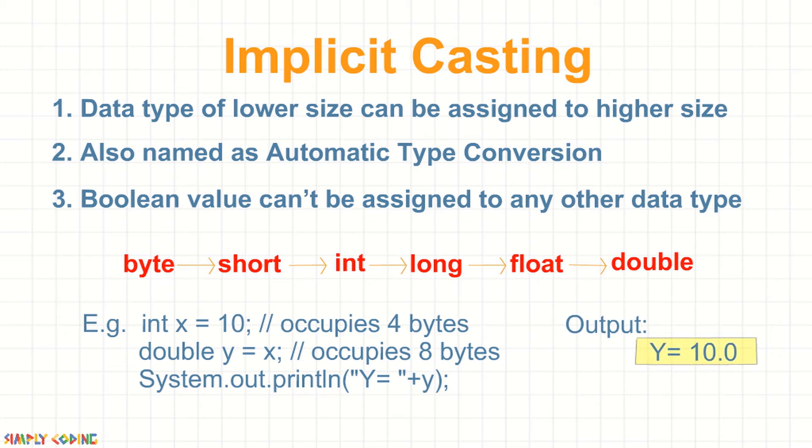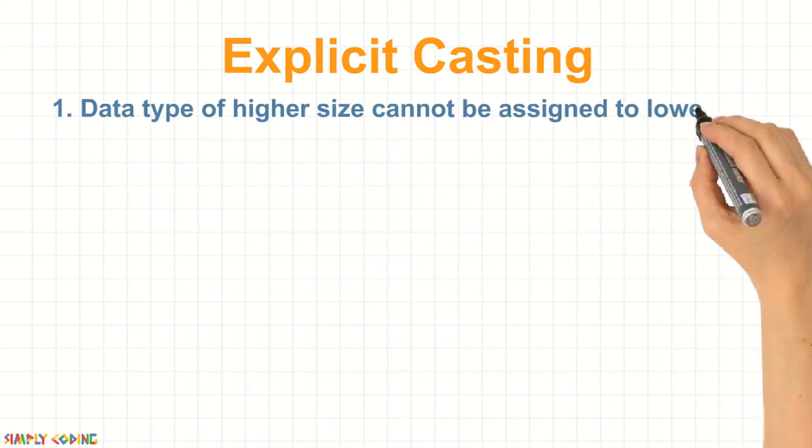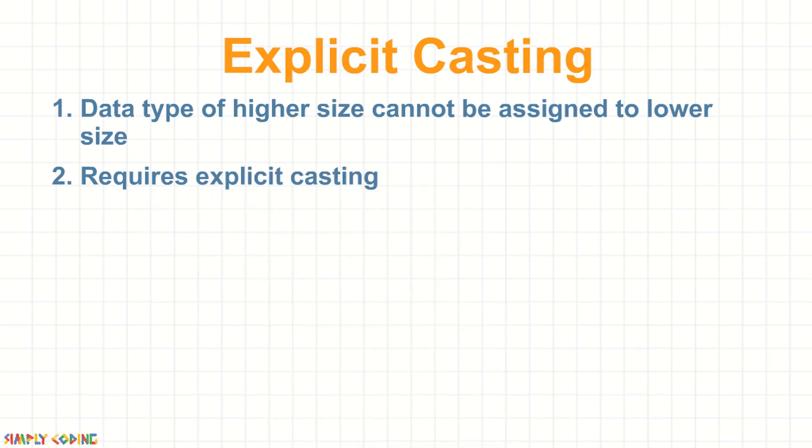A data type of higher size, meaning occupying more memory, cannot be assigned to a data type of lower size. This is not done implicitly by JVM and requires explicit casting.